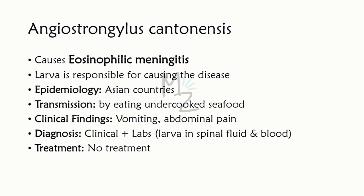Larvae are typically ingested in undercooked seafood such as crabs and prawns. Epidemiology: infection most often occurs in Asian countries. Clinical findings include vomiting and abdominal pain. Diagnosis is made primarily on clinical grounds, but occasionally larvae are found in the spinal fluid.